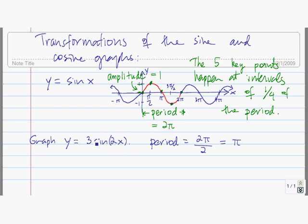Multiplying sine of 2x by three stretches it vertically. So instead of having an amplitude of one, we're going to have an amplitude of three — stretching it up and down by a factor of three.